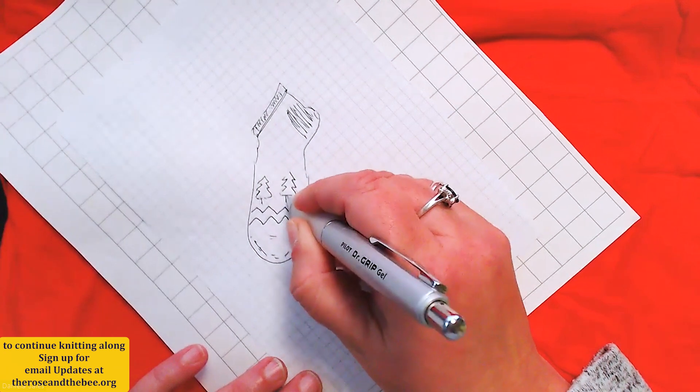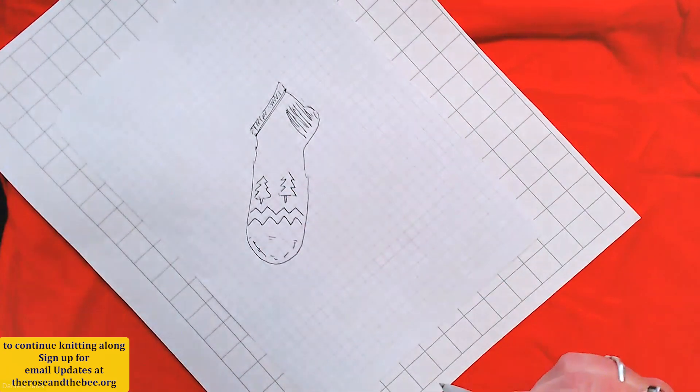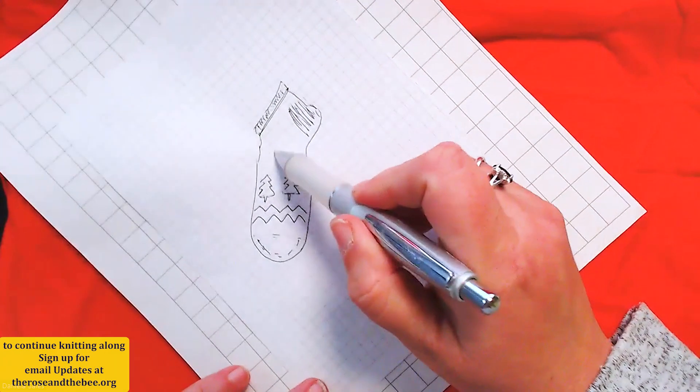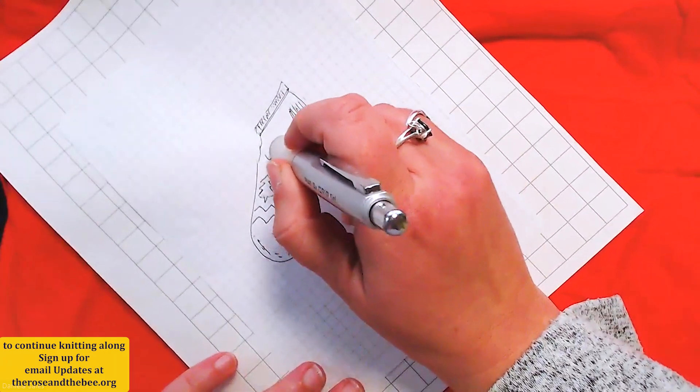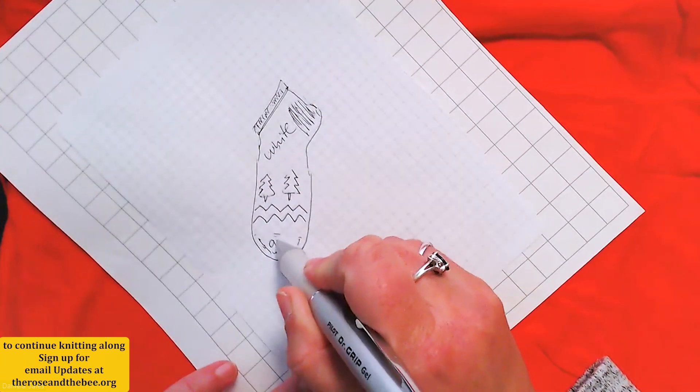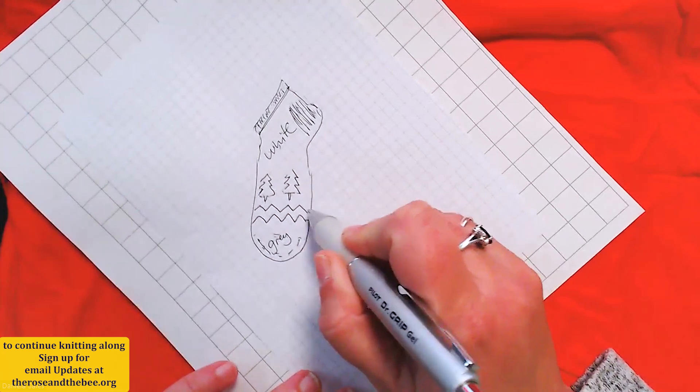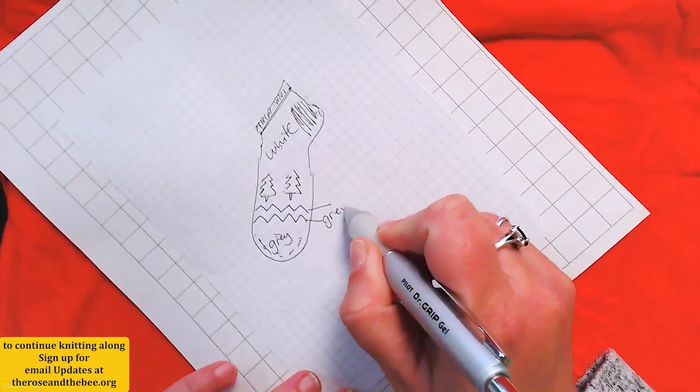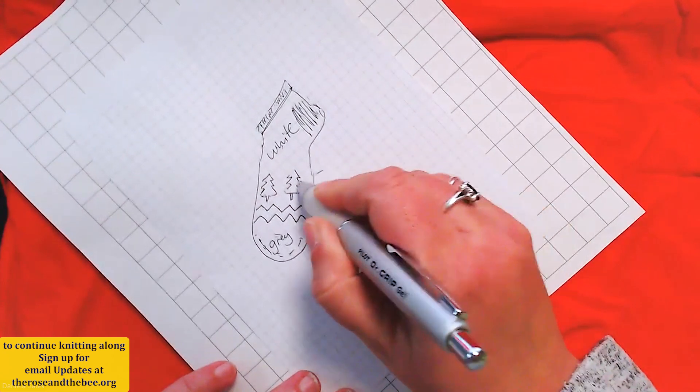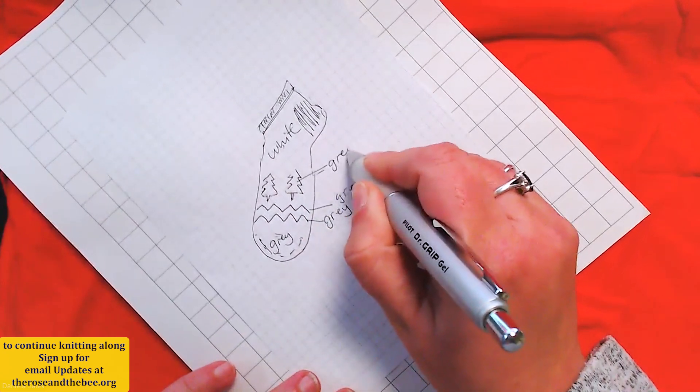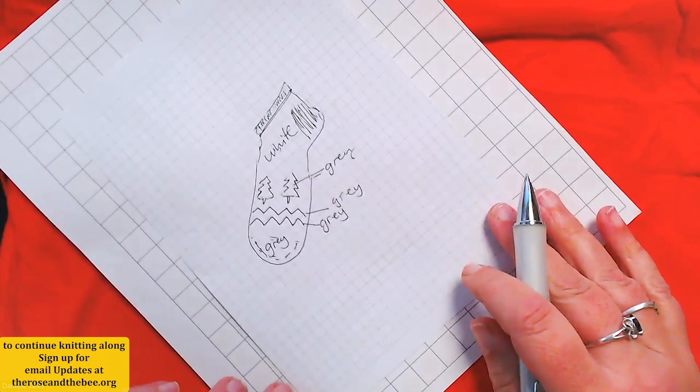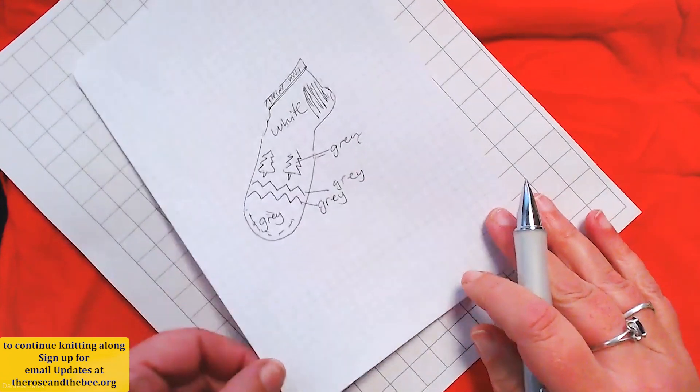Okay, so that's a decent sketch. We don't have to get too detailed. So, all of this will be white. The toes here will be gray. These lines will be gray. And the trees will be gray. Okay, we are ready to draw our pattern, which we will follow in our color work.